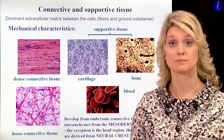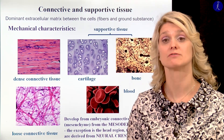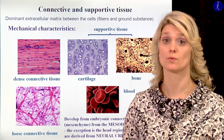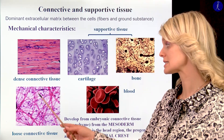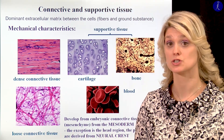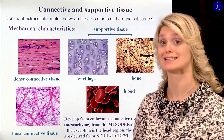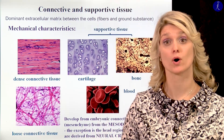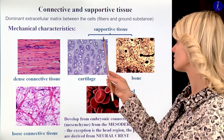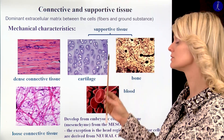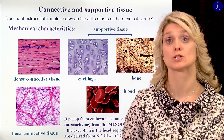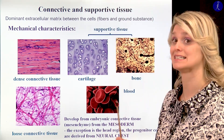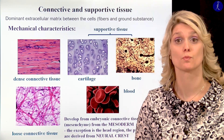We have a lot of different types of the connective and supportive tissues. For example, this one is from a loose connective tissue, and we can talk about dense connective tissue, and we have a lot of different types between these two endpoints. And we have other types where the ground tissue is dominant, for example in the cartilage and bones — these are much stronger, that's why we call them supportive tissue.